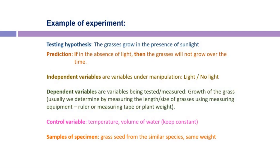Here is another example. The hypothesis is: grasses grow in the presence of sunlight. Based on the hypothesis, the prediction is: if in the absence of light, then the grasses will not grow over time. The independent variable is light or absence of light, the dependent variable is growth of grass, and the control variables are temperature and volume of water. The specimen samples are grass seeds from a similar species and same weed.